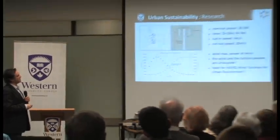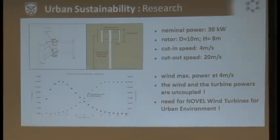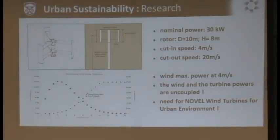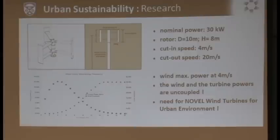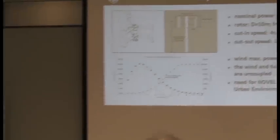The reason for this gap is clear when you look at the data. The available wind power in an urban environment peaks around four meters per second, but the power curve of the best available wind turbine peaks around 14 meters per second. They are not correlated — the turbine provides maximum energy where the wind doesn't provide energy. This decoupling needs to be addressed, and that's one thing we are starting to work on. We need a new type of urban wind turbine.